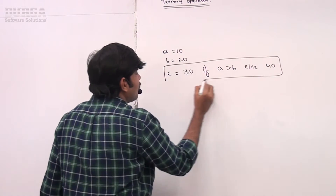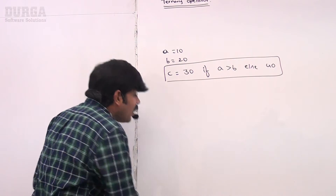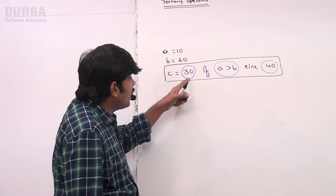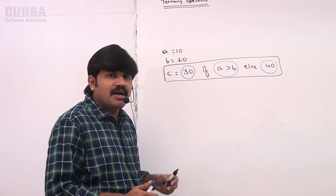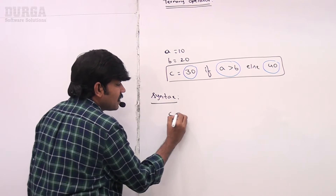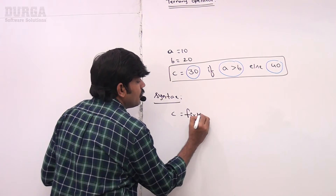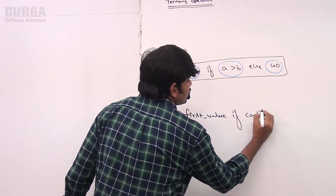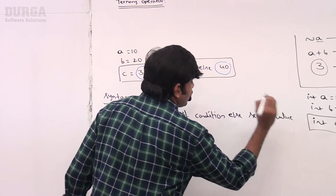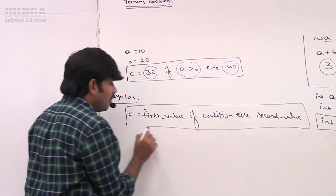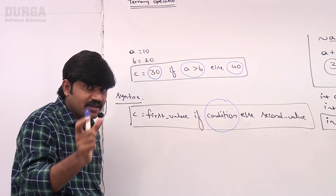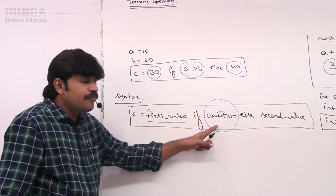This is the syntax of the ternary operator in Python. How many arguments are there? First argument, second argument, third argument — three arguments, that's why it is called a ternary operator. The general syntax is: c = first_value if condition else second_value. If the condition evaluates to true, the first value is considered; if false, the second value is considered.